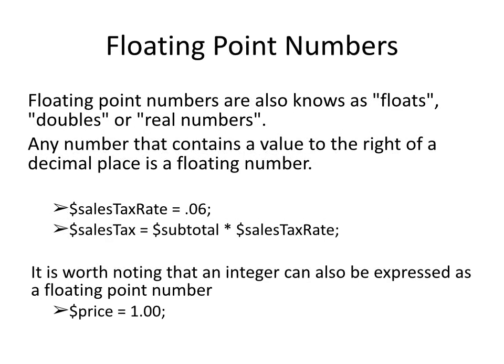Another primitive data type is floating point numbers, also referred to more commonly as floats or doubles, and also known as real numbers. Any number that contains a value to the right of a decimal place is a floating point number. In the examples provided, the sales_tax_rate variable stores the value of 0.06. The sales_tax variable receives its value by taking the subtotal variable and multiplying it by the sales_tax_rate, which would more than likely arrive at a number with decimal places. It is worth noting that an integer can also be expressed as a floating point number by simply adding a decimal place and putting zeros to the right of it.